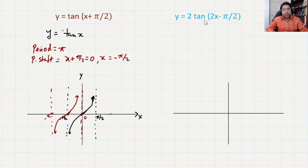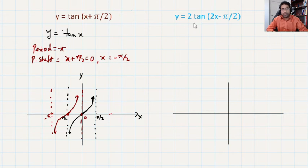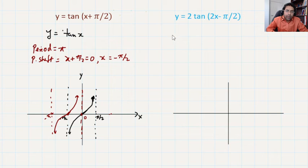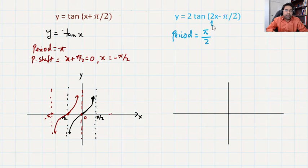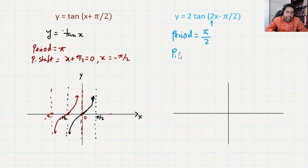Now look at the second function: y = 2·tan(2x - π/2). As I said, even though we can see the 2, it is useless to talk about amplitude in a tan graph. So we talk about the period. The coefficient of x is 2, so the period is π/2 — pi is the parent graph's period and dividing by the coefficient b gives π/2.